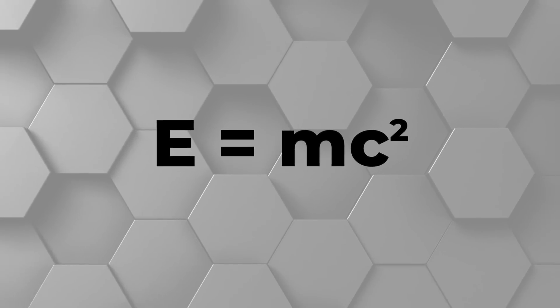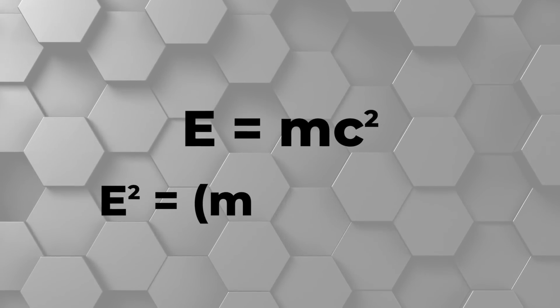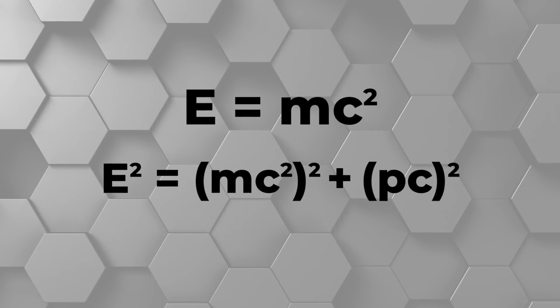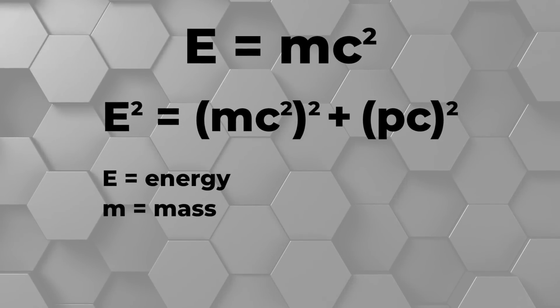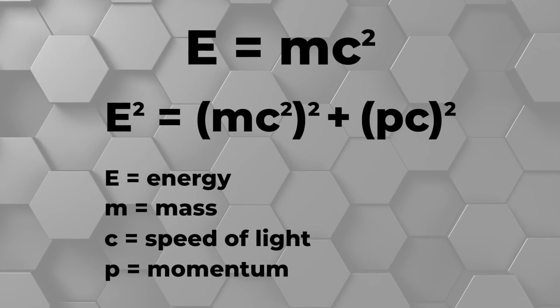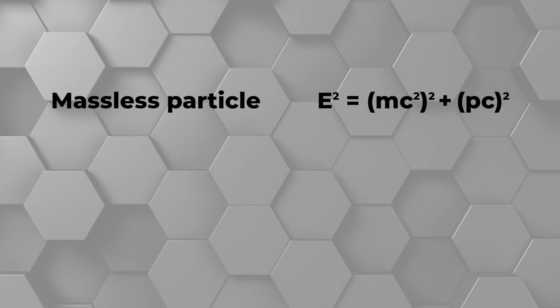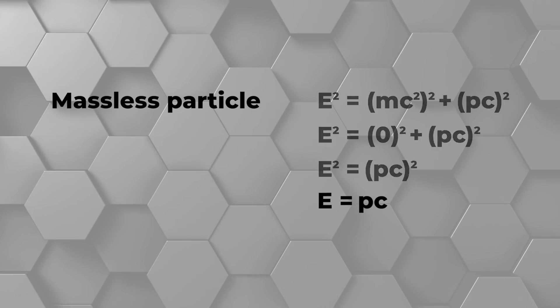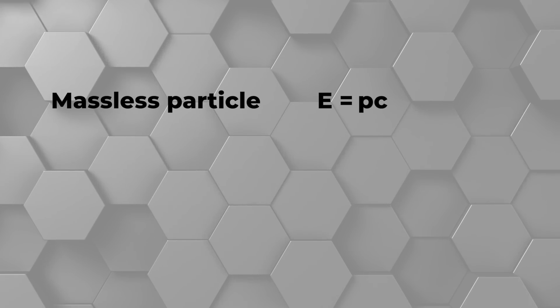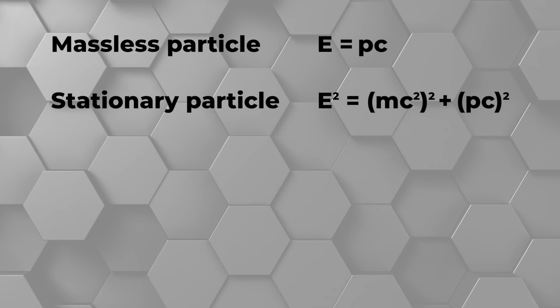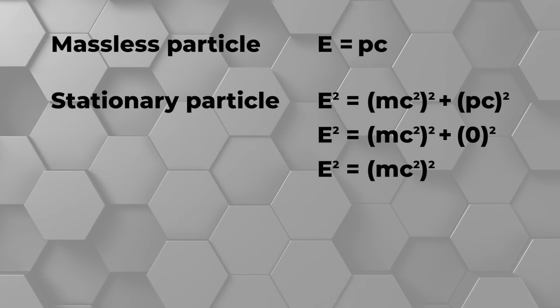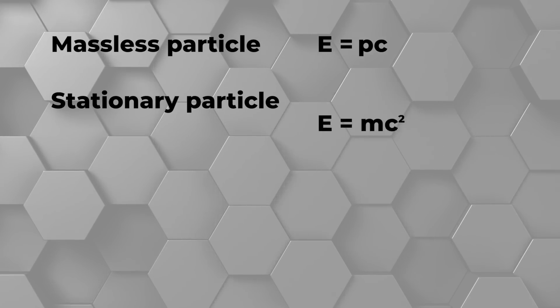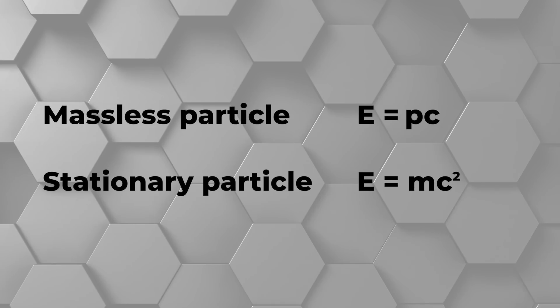Take Einstein's venerable equation E equals MC squared. While it's certainly right, it's simply a special case of the full equation. The full equation is the more complicated E squared equals MC squared all squared plus PC all squared. E is energy, M is mass, C is the speed of light, and P is momentum. For a massless particle, we can set M equals to zero and we get E equals PC. This is the proper equation for a massless photon. We can also see what happens if we set the motion of the particle to zero. This means setting the momentum, or P, to zero and we get the more familiar E equals MC squared equation. Basically, E equals MC squared only applies if an object is motionless.